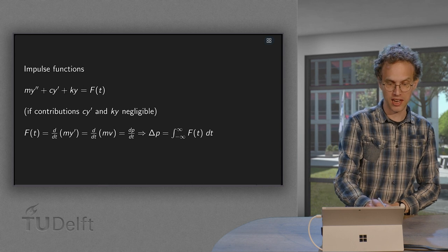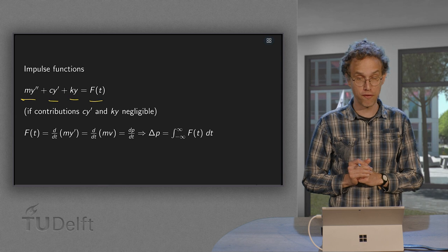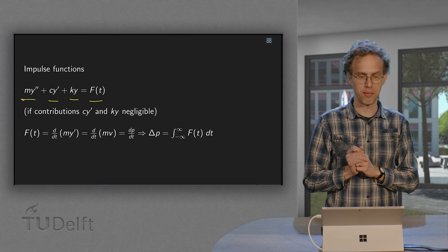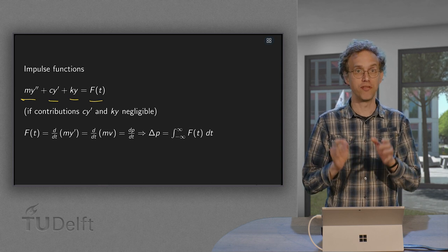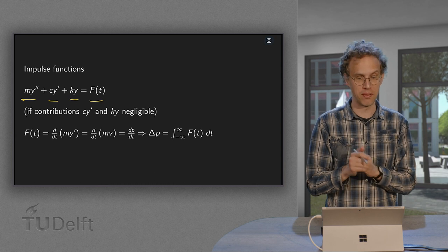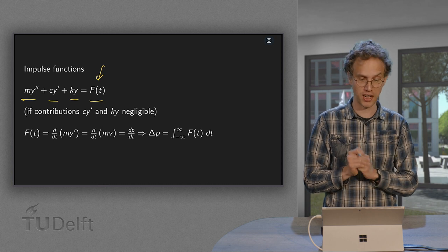Which can be modeled as my'' + cy' + ky = F(t). Now suppose these contributions cy' and ky are negligible. So if you have a very large force F in a very short period of time, so if this force dominates the motion for this very short period of time.